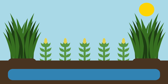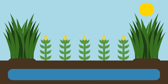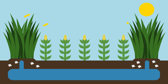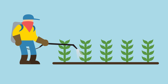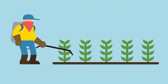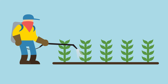The growth of weeds in fields reduces the yield of crops because the weeds compete with the crops for water, light and minerals in the soil. Farmers can spray their fields with weed killers, but this may also damage the environment or even the crop plants themselves.